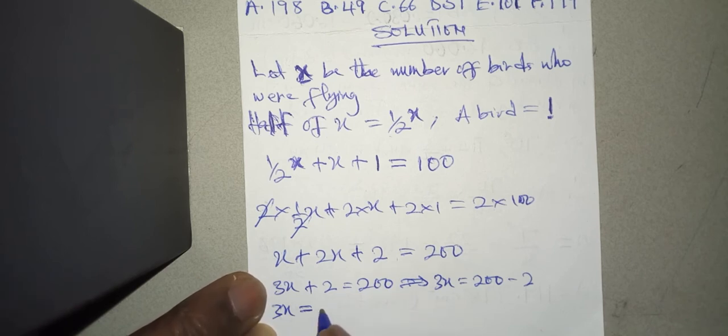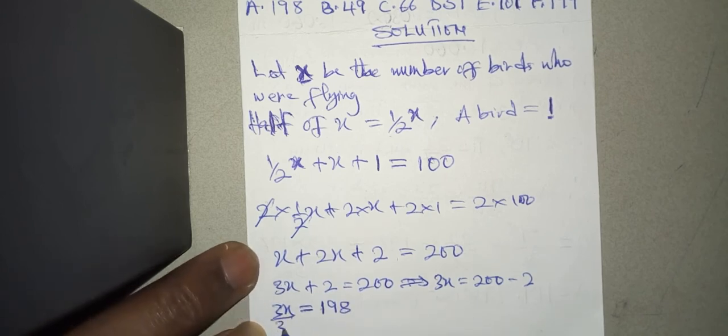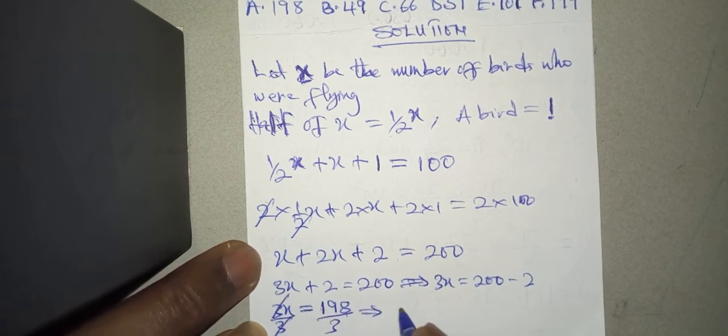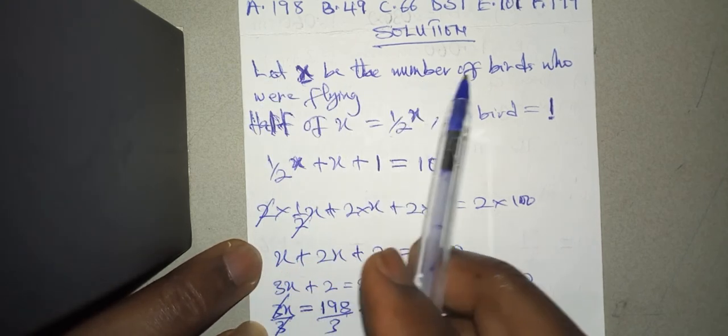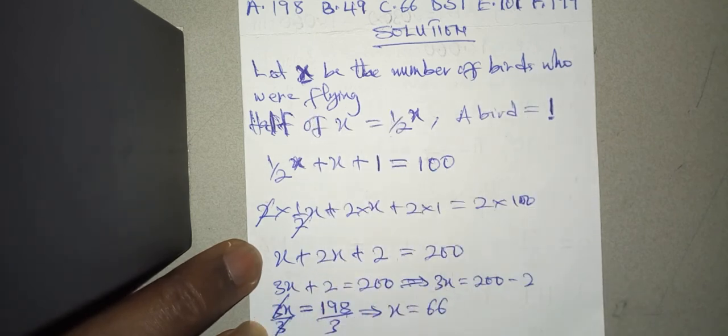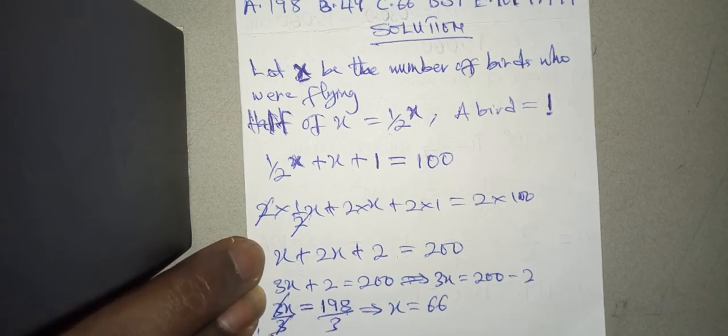Now what do we do? We want x, so we divide through by 3. So this would delete that. Now we have x standing alone here, therefore 198 divided by 3, now we have 66 for x. Now we said here that let x be the number of birds who were flying, therefore whatever we have for x is the number of birds who were flying.